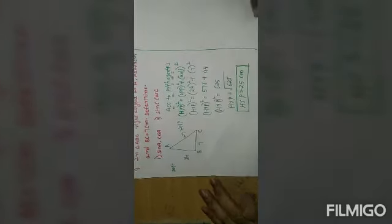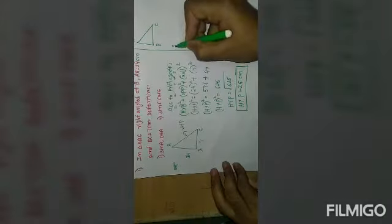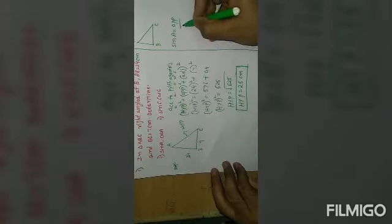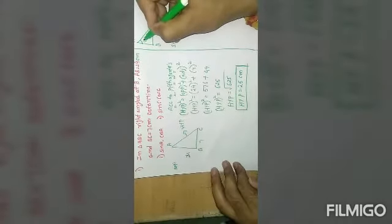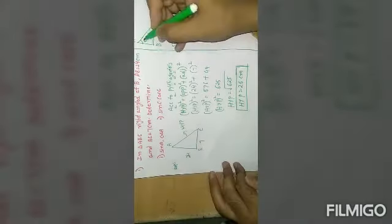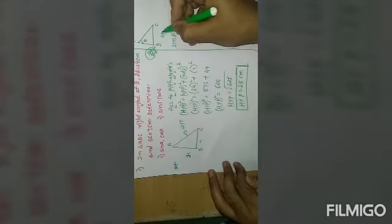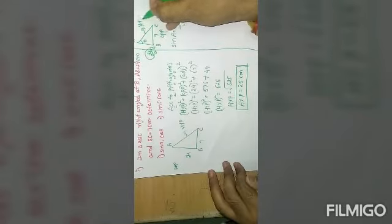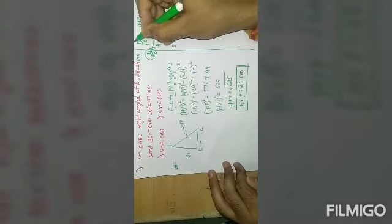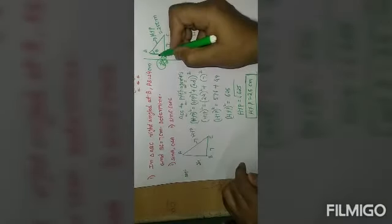Now we need to find sine A. Sine A means opposite by hypotenuse. If we take theta at angle A, then the adjacent side is 24 and the opposite side is 7. The hypotenuse never changes but opposite and adjacent change according to the angle.